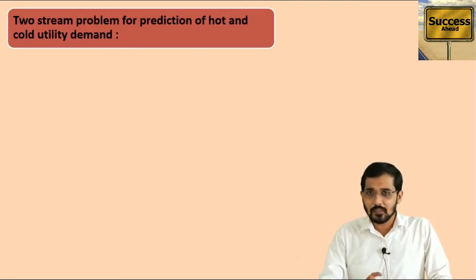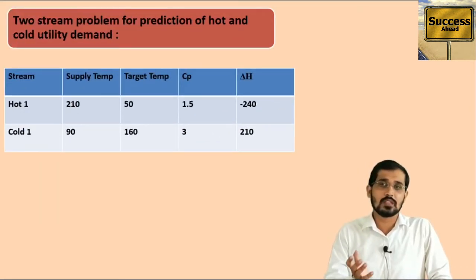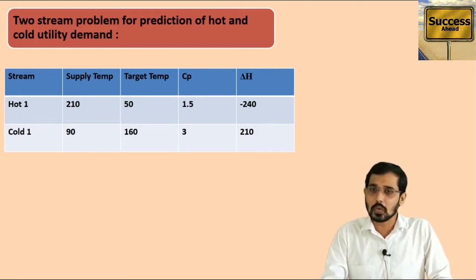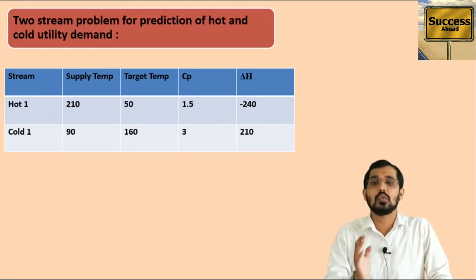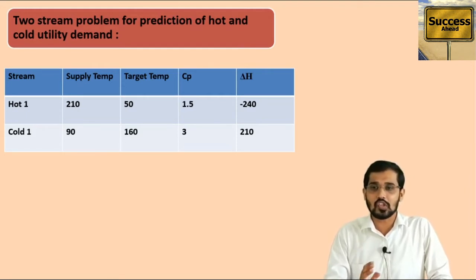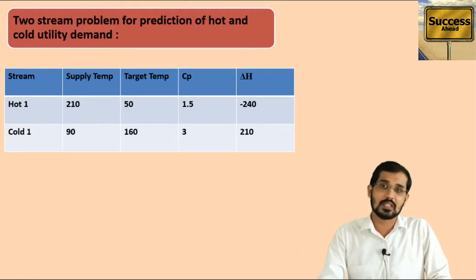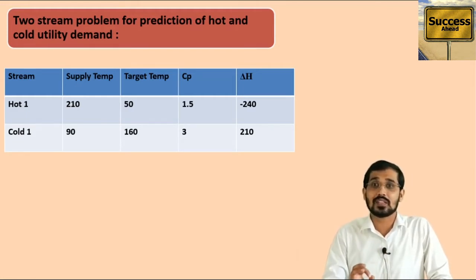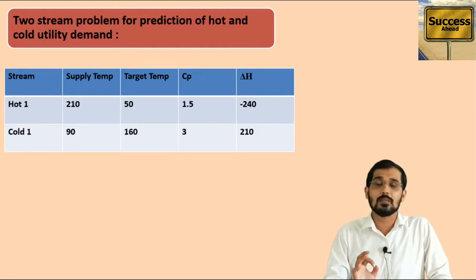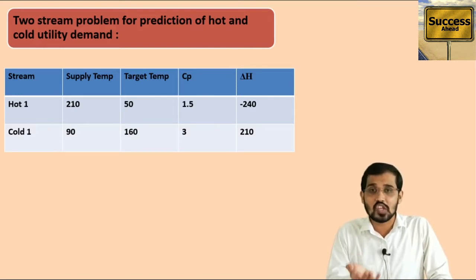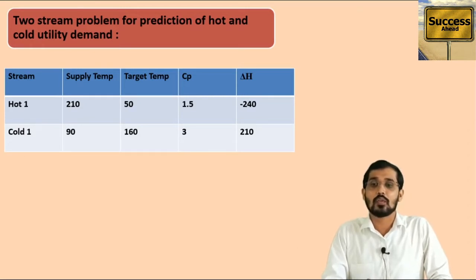I will consider two-stream data. The first stream is nothing but your hot stream and the second stream is nothing but your cold stream. Supply temperature for the hot stream is 210°C and for the cold stream is 90°C. Target temperature for the hot stream is 50°C and for the cold stream is 160°C. Specific heat for the hot stream is 1.5 and for the cold stream is 3. Lastly, the delta H value — the enthalpy change — is minus 240 for the hot stream and 210 for the cold stream.